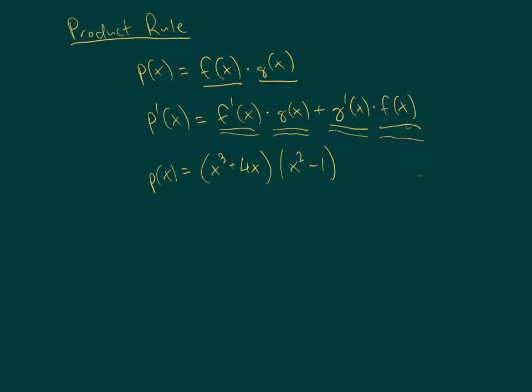You can see that we have two functions multiplied together, and I could multiply it out and just use the power rule, but using the product rule is a little bit faster. So here's how it works.